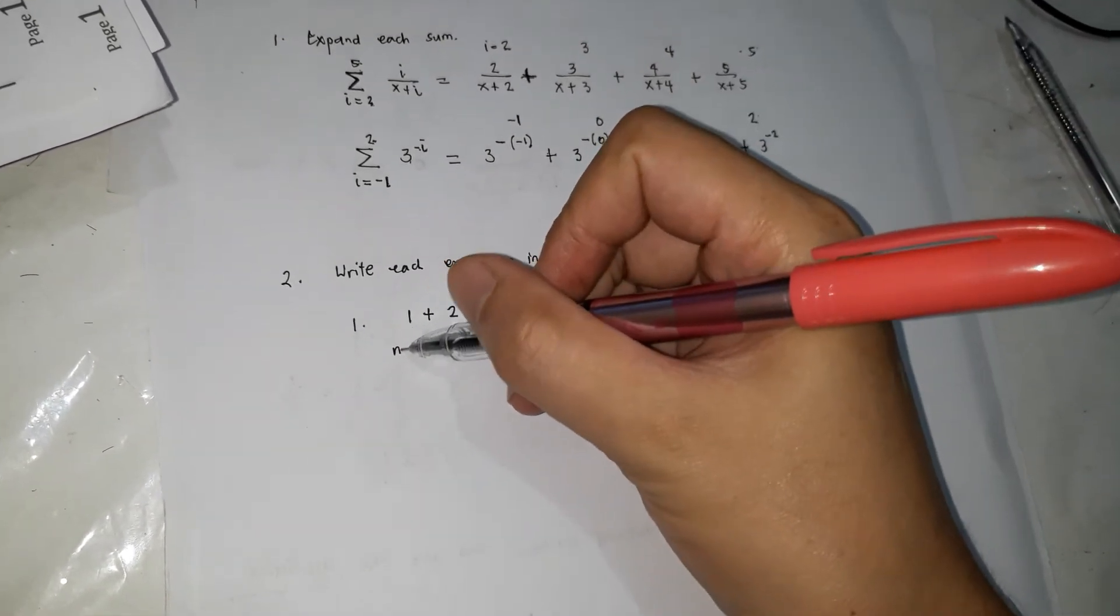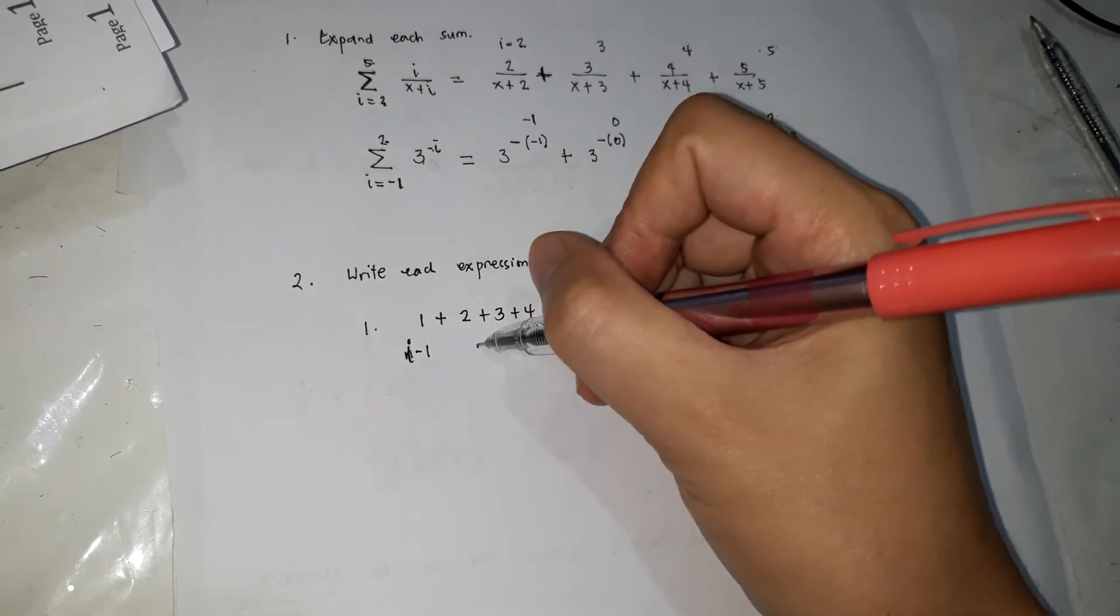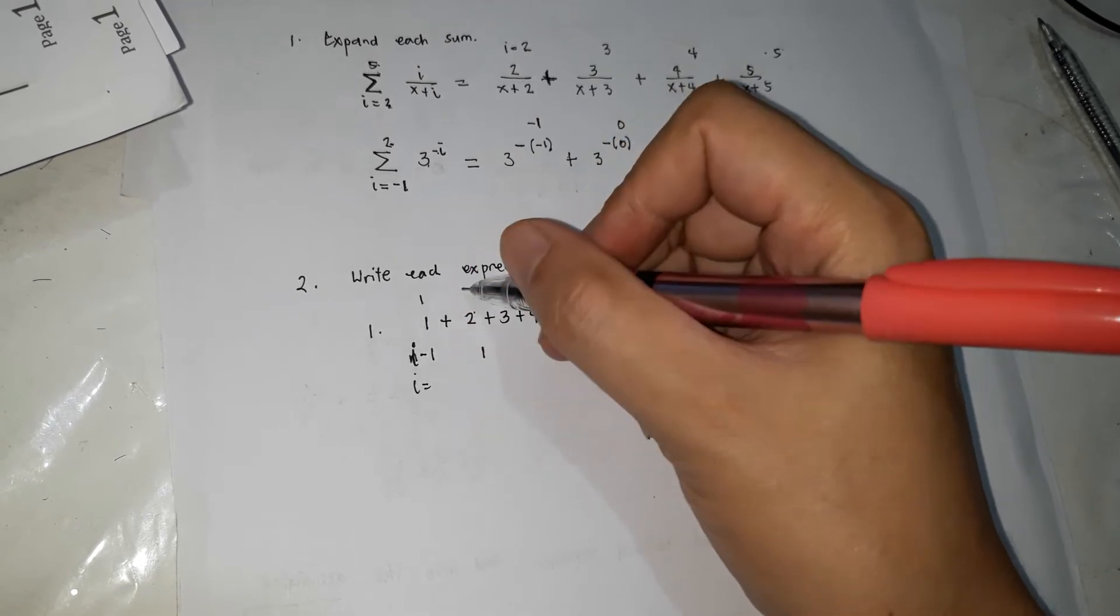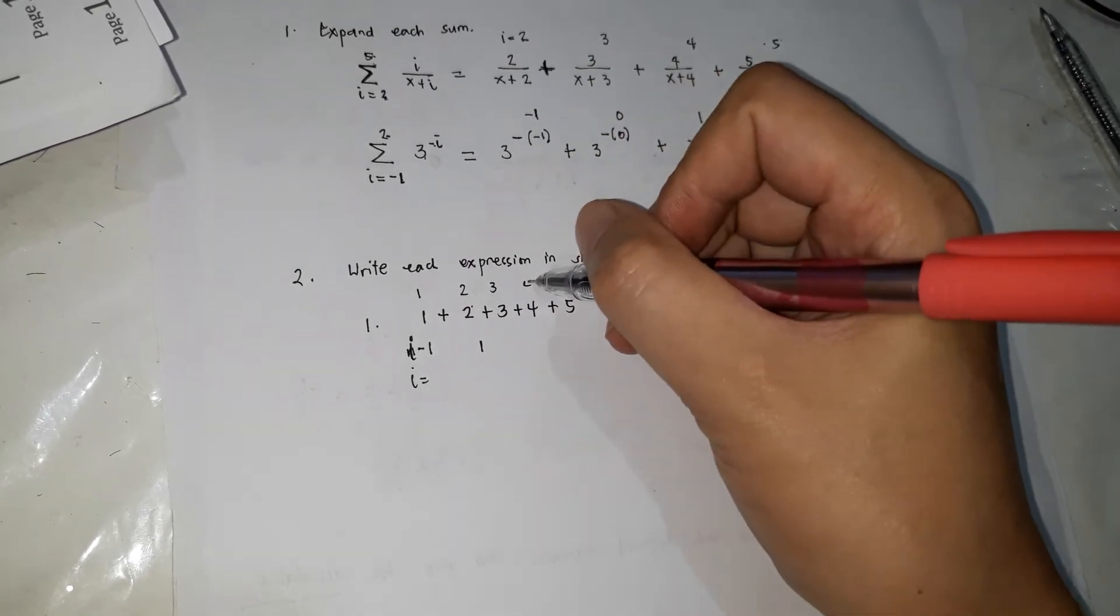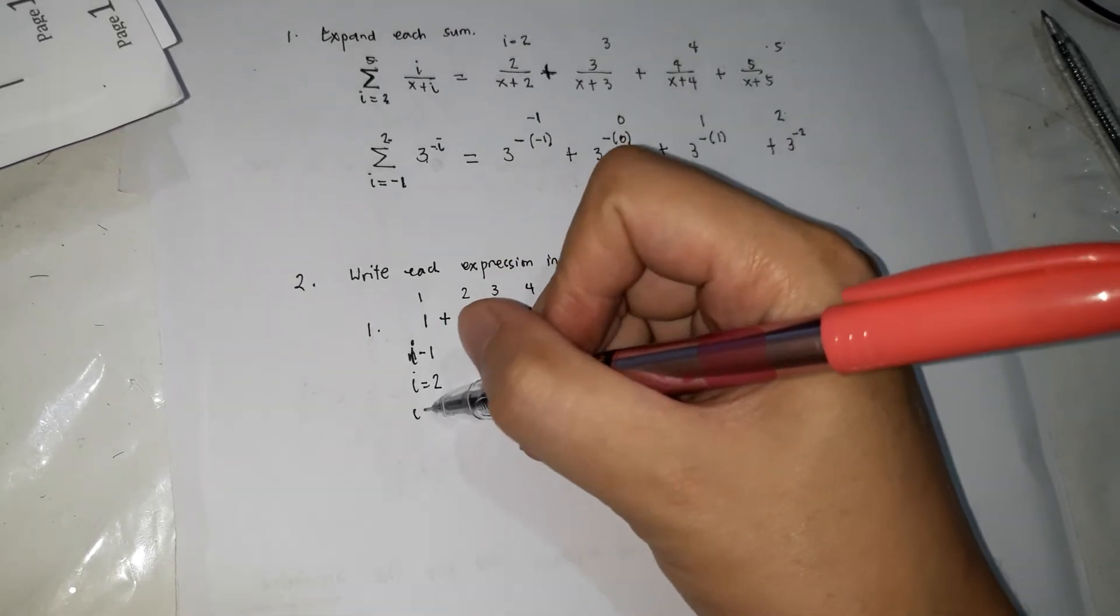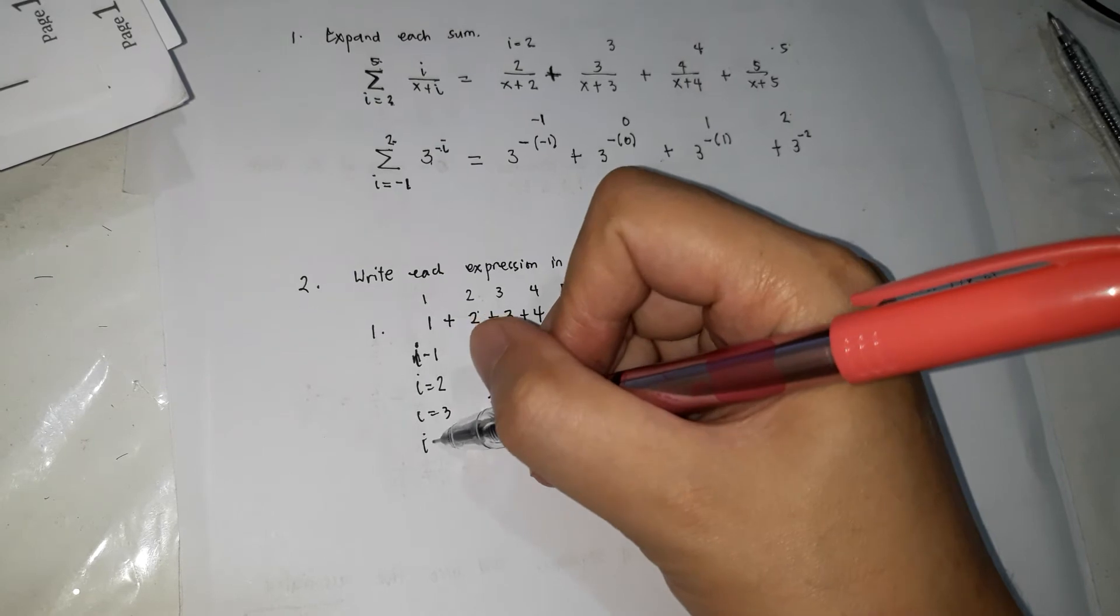So when i is equal to 1, 1. Kapag ang i is 2, because this is the first term, second term, fourth, fifth. So kung i is equal to 2, 2 siya, di ba? So kung i is equal to 3, 3. Kung i is 4, 4.